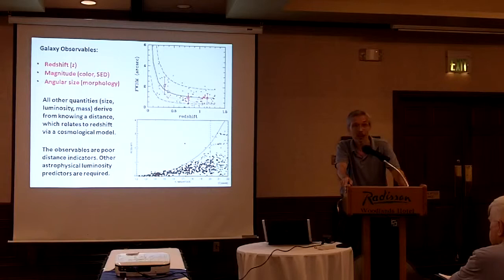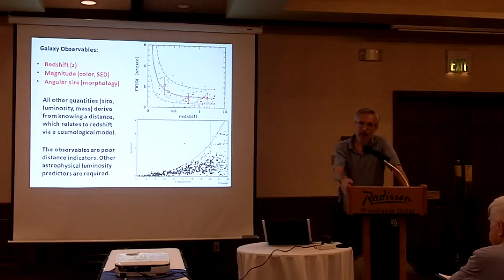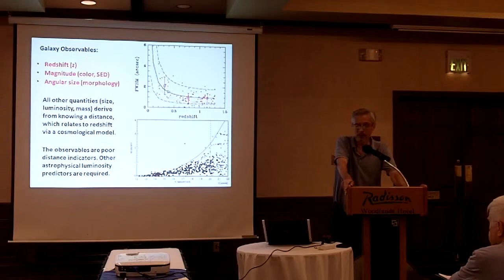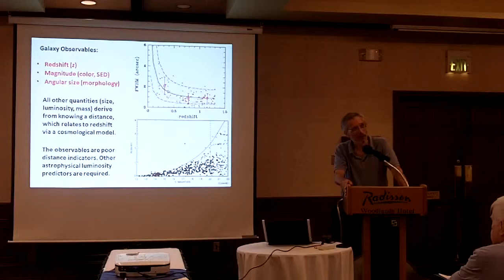Basically those are three very simple things, and that is all you get. Everything else that you care about cosmologically — the physical size, the energy emitted per second, the mass — revolves around knowing a distance, and that relates to redshift through a cosmological model. So these are secondary interpretive quantities. And most of those observables, as was known a long time ago, are poor distance indicators.